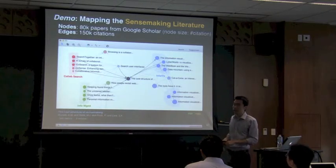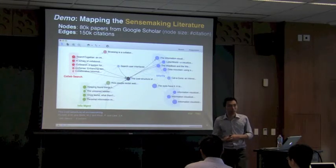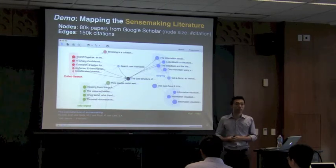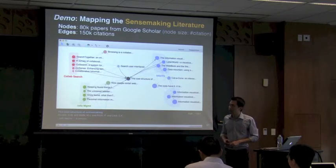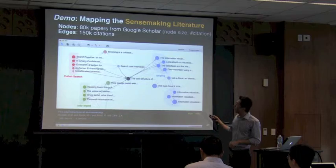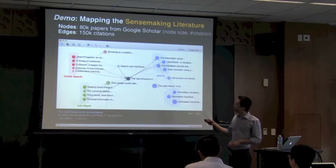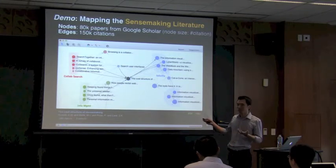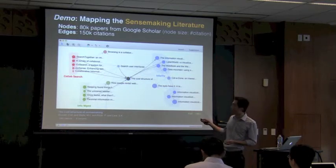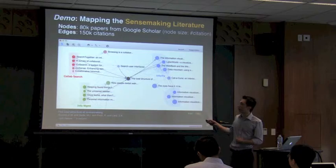Sense-making is a subfield in HCI which basically studies how people make sense of information. You can imagine it's an area that overlaps and has many sub-areas. What I'm showing here is the final outcome that we want. My starting point here is one paper — it's called the sense-cause structure of sense-making. It's a very famous paper in the sense-making literature.